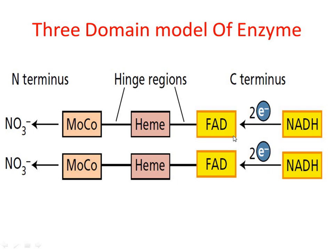NADH binds at the FAD binding region of each subunit and initiates a two-electron transfer from the carboxyl terminus through each of the electron transfer components to the amino terminus. Nitrate is reduced at the molybdenum complex near the amino terminus. The polypeptide sequences of the hinge region are highly variable among species.